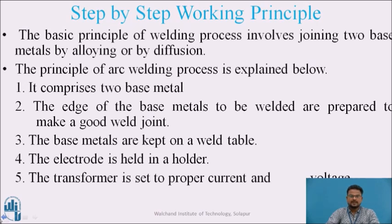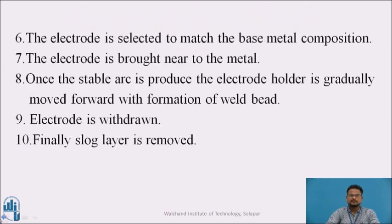The base metals are kept on a weld table. The electrode is held in a holder and the transformer is set to the proper current and voltage. The electrode is selected to match the base metal composition. The electrode is brought nearer to the metal, and once a stable arc is produced, the electrode holder is gradually moved forward with the formation of the weld bead. Then the electrode is withdrawn, and finally the slag layer is removed from the weld workpiece.